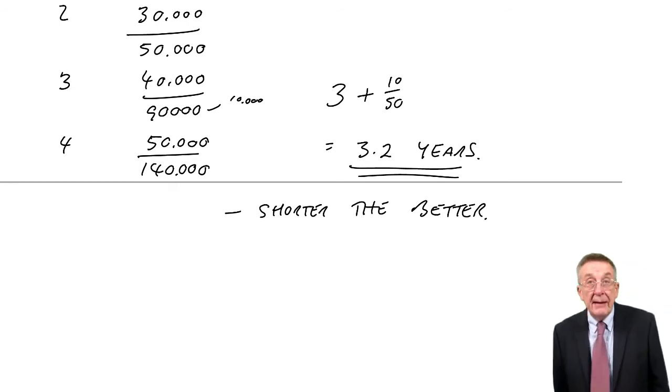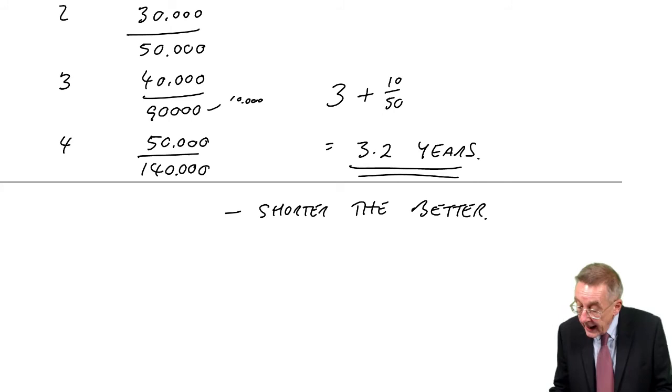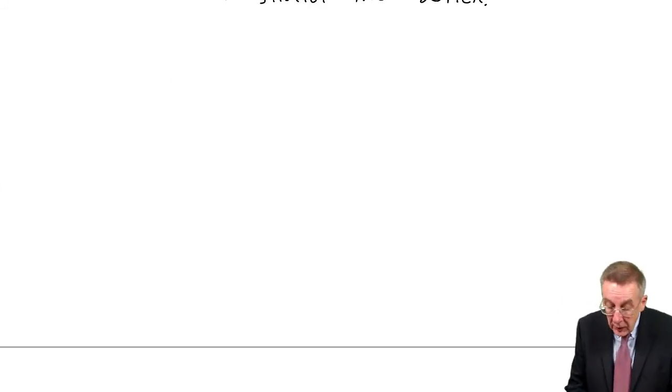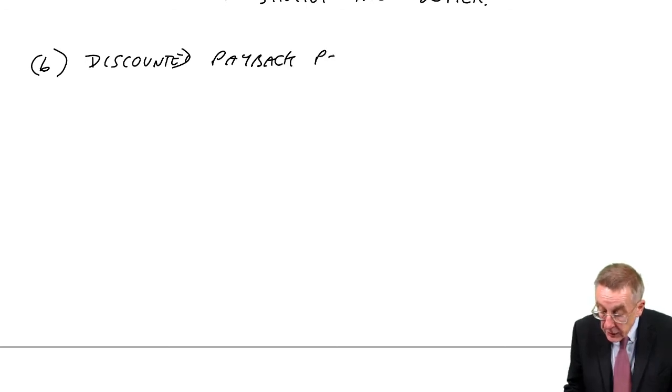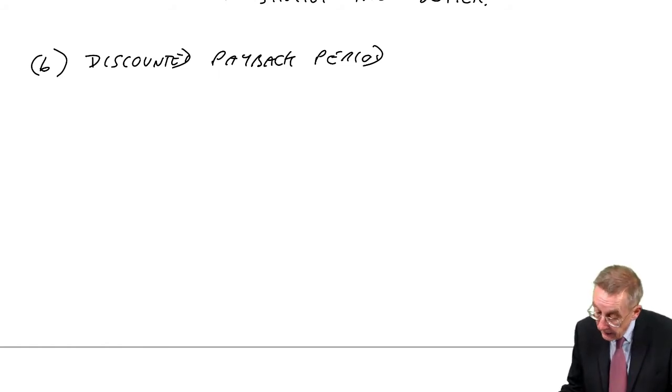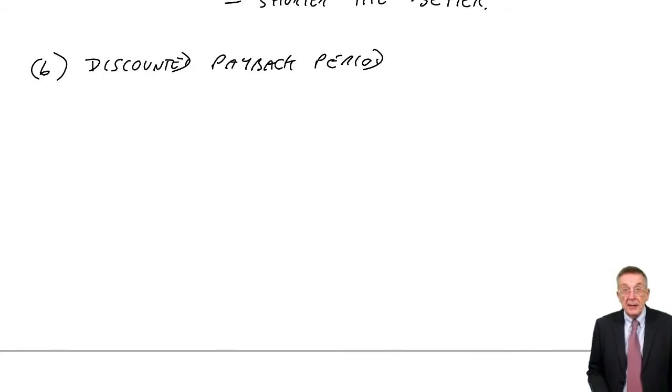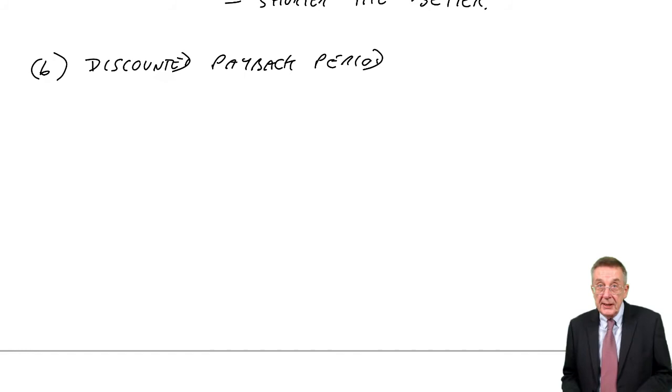So that's payback period. The only thing is that the straight payback period is ignoring all this interest business. The later you get the money, there's more interest cost. And so perhaps to make it slightly better, part B wants the discounted payback period. If you get a question on this, check very carefully, does it just ask for the payback period? If it does, it's 3.2 years. If on the other hand, they ask for the discounted payback period, it's exactly the same idea, except we do it on the discounted cash flows.